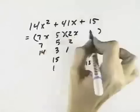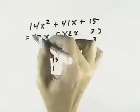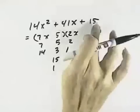So if I start with the 5 and the 3, I can say I get 10 on the inside and 21 on the outside. 10 and 21 is only 31, so that's not going to work.